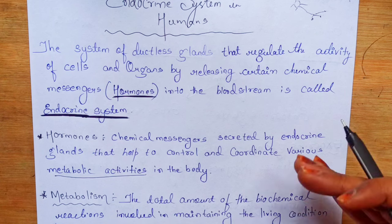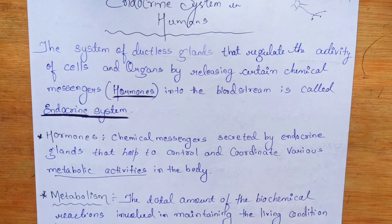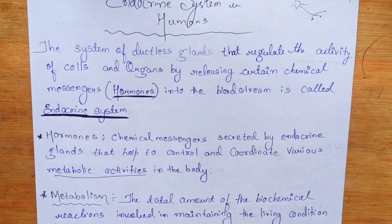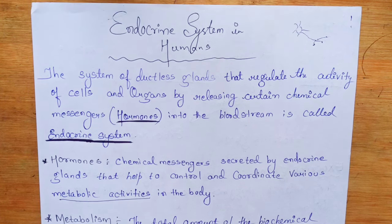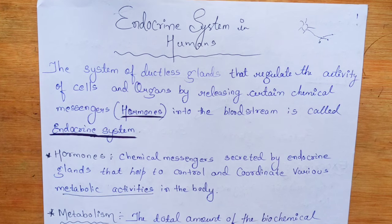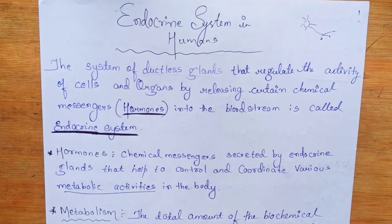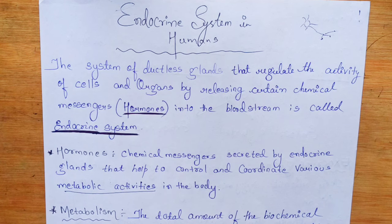In our body, metabolism, growth, body temperature, bone formation, and brain development — all of these activities are the responsibility of a system. We call it the endocrine system. The endocrine system is a system in our body where many glands work together.